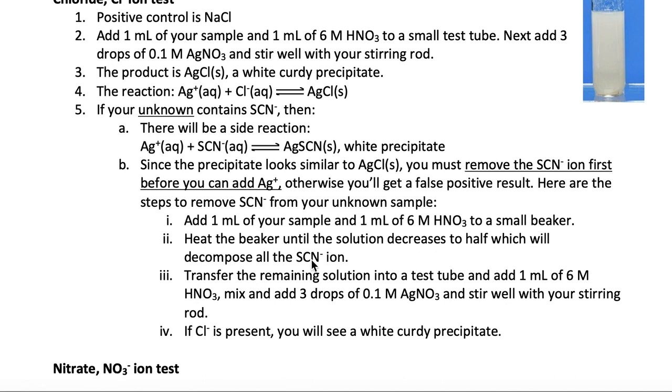Once that happens, you can then transfer this solution back into a test tube and then add nitric acid with three drops of silver nitrate and stir and check if you see the precipitate. If that white curdy precipitate forms, then chloride is present in your sample.